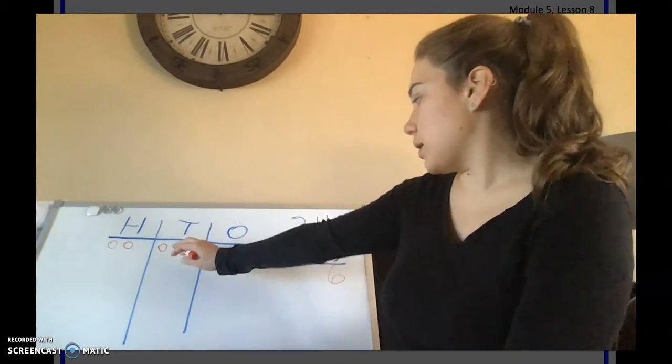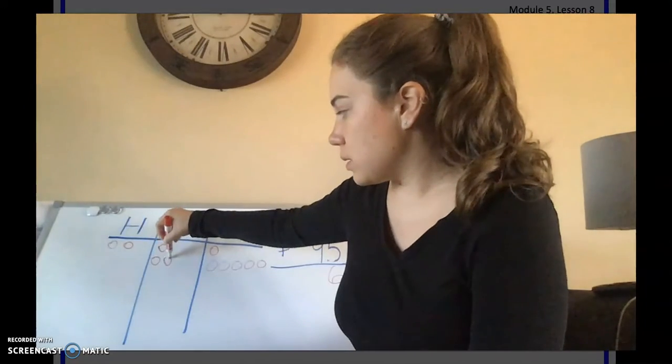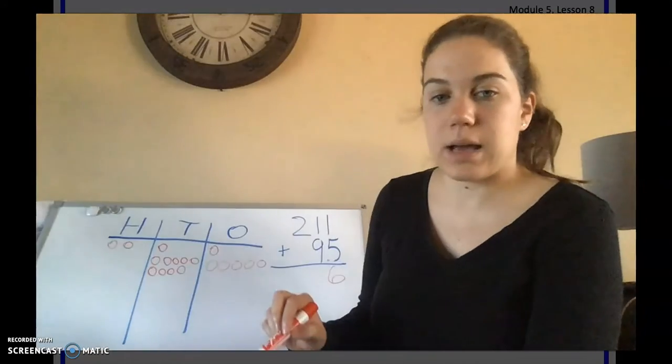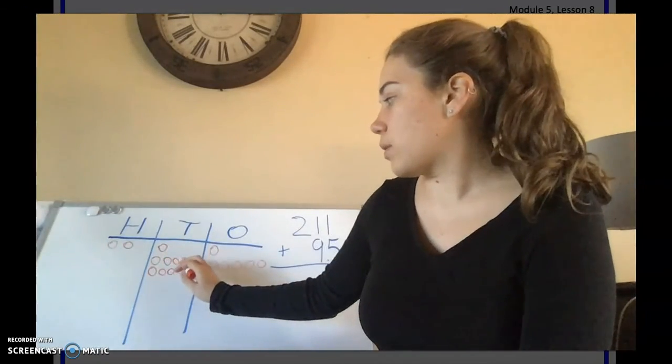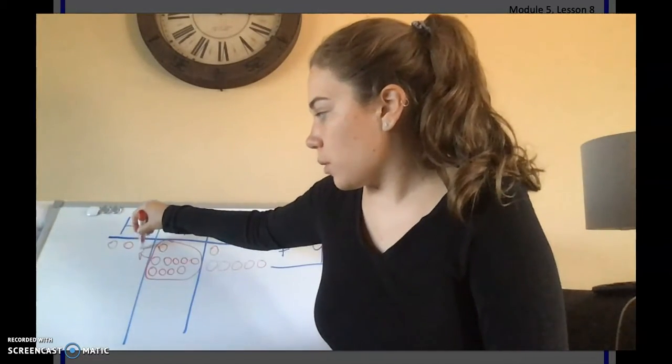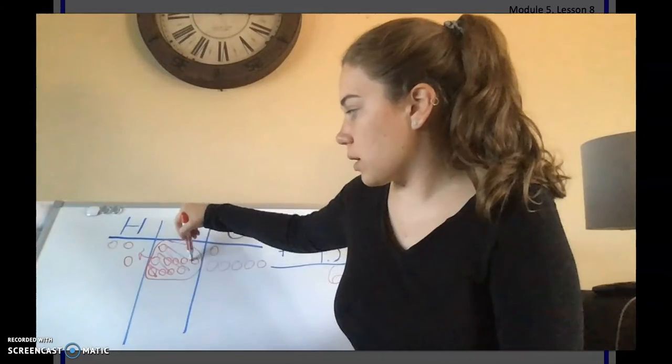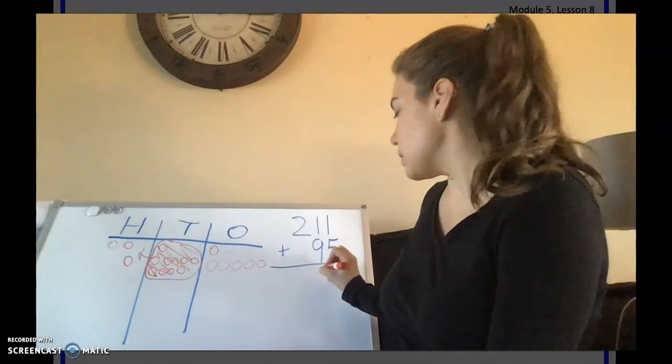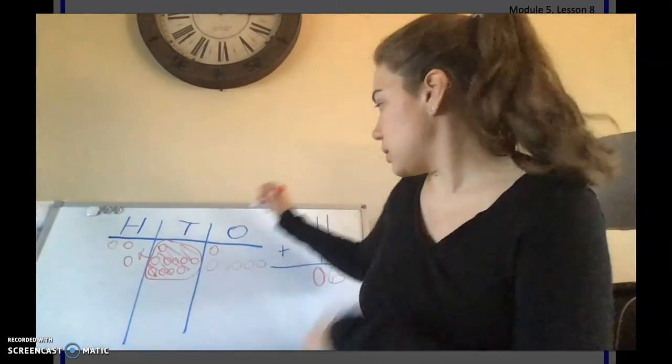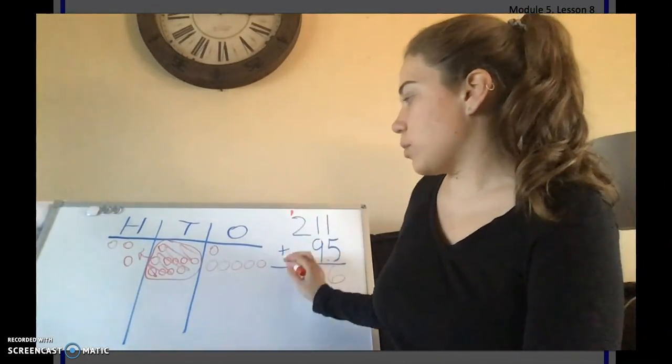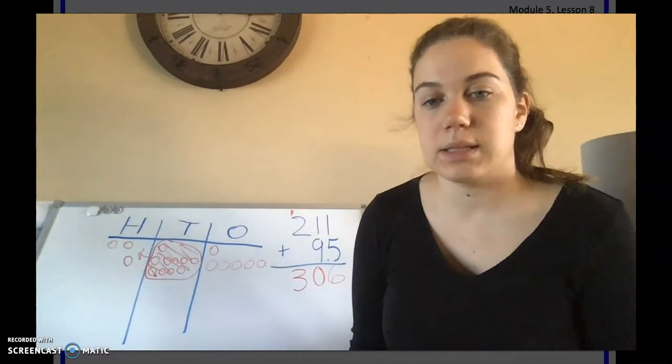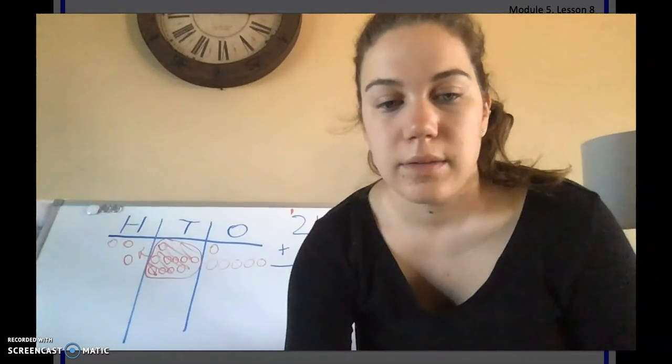Now we have 1 plus 9. Our one's already there. Let's add our 9 more: 1, 2, 3, 4, 5, 6, 7, 8, 9. Let's count how many we have: 1, 2, 3, 4, 5, 6, 7, 8, 9, 10. So we're going to trade those 10 tens in for 1 hundred. Those are no longer there. So we don't have any tens. So we already have our 2 there. We traded in our 1. So we brought that over. So now we have 2 plus 1. And there's 3 altogether. So 211 plus 95 equals 306. Very nice job.